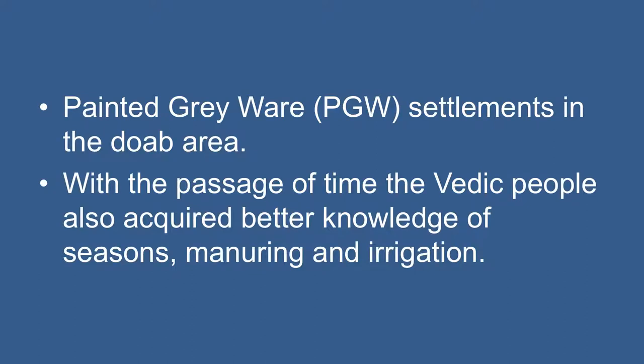There was a continuous increase in population during the later Vedic period due to the expansion of the economy based on agriculture. With the passage of time, the Vedic people also acquired better knowledge of seasons and irrigation. All these developments resulted in the sustainable enlargement of certain settlements such as Hastinapur and Koshambi towards the end of the later Vedic period. These settlements slowly began to acquire the characteristics of a town.